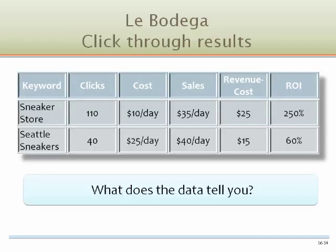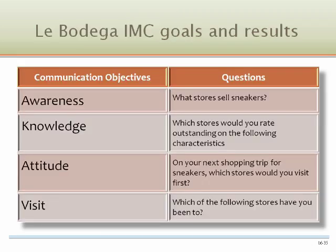For La Bodiga, a small sneaker store in Seattle, we see the total cost in column 3 and the sales from AdWords in column 4. The ROI in column 6 is higher for the sneaker store due to its lower cost, even though the sales were a bit lower. It is important to realize that metrics give us only a part of the consumer research needed to make decisions. There are other communication objectives that would be better understood through a survey of customers.